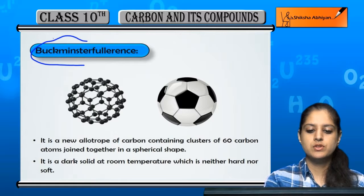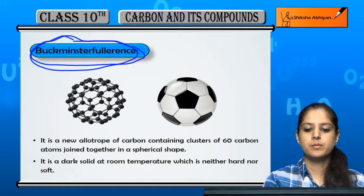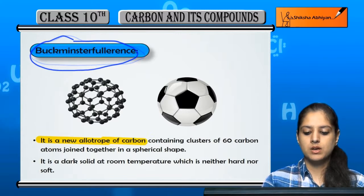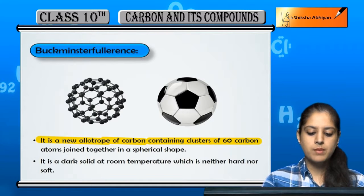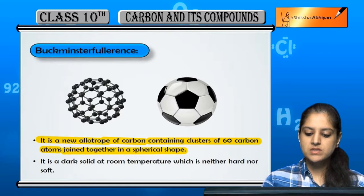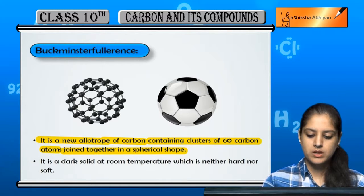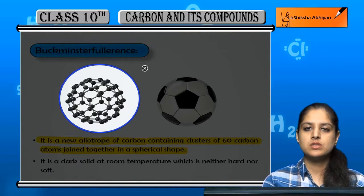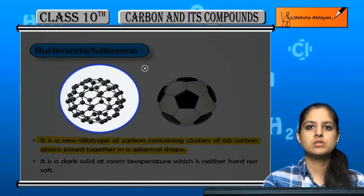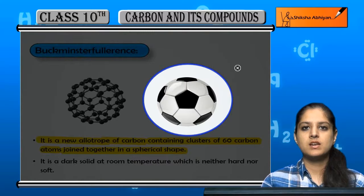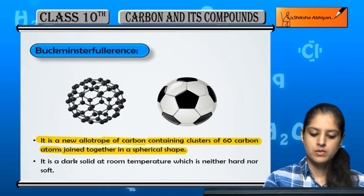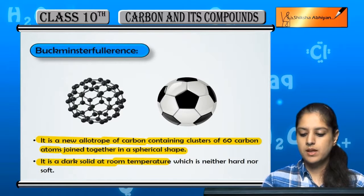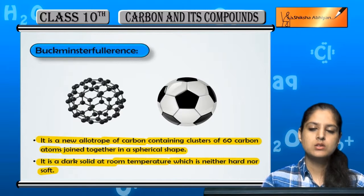The third allotrope of carbon is Buckminster Fullerene. It is a newly discovered allotrope — a cluster of 60 carbon atoms joined in a spherical shape. The structure looks like a football. It is a dark solid at room temperature. It is neither very hard nor very soft — its hardness is intermediate.